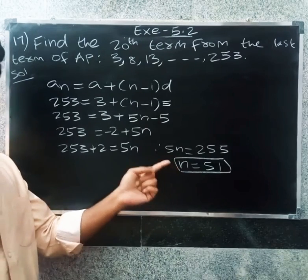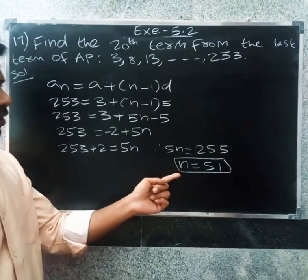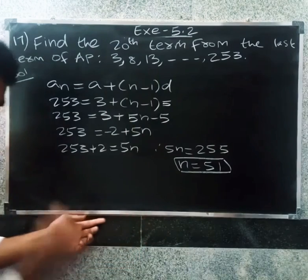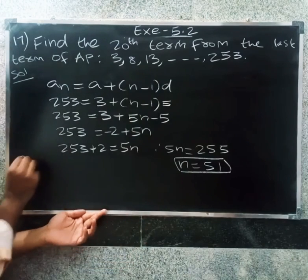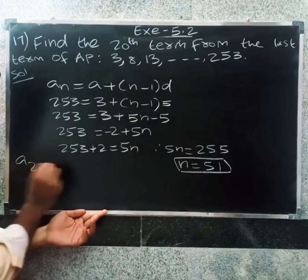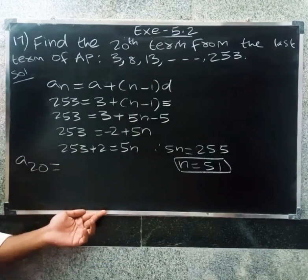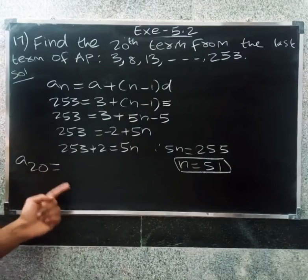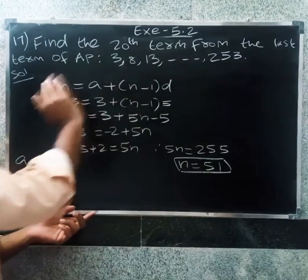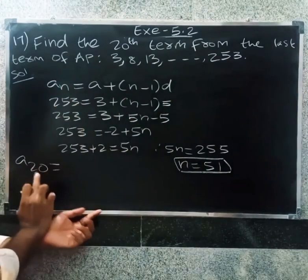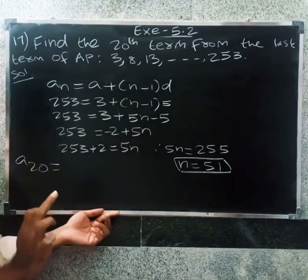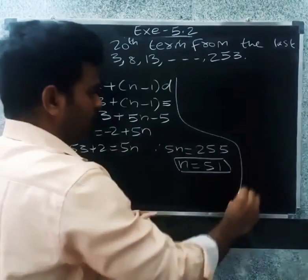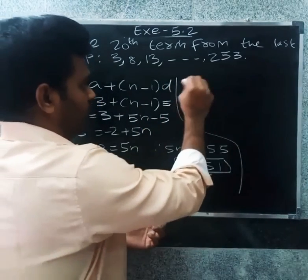We have 51 terms total. The 20th term from the last means we count 20 terms back from 253. So the 20th term from the last corresponds to term number 51 minus 20 plus 1 equals 32nd term from the start.